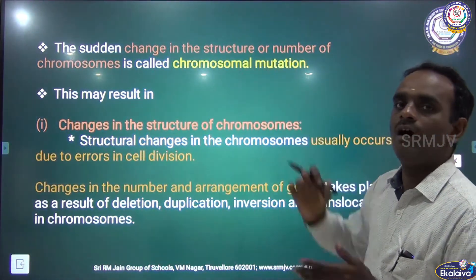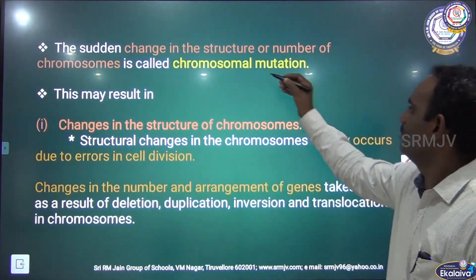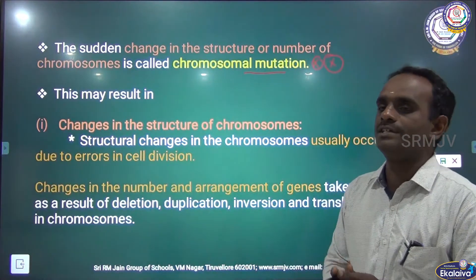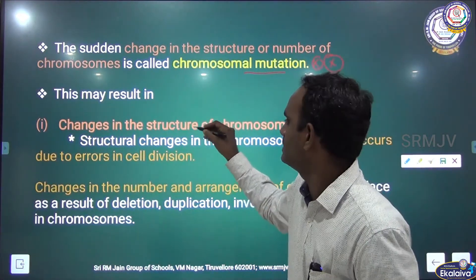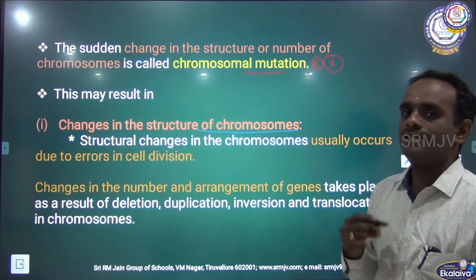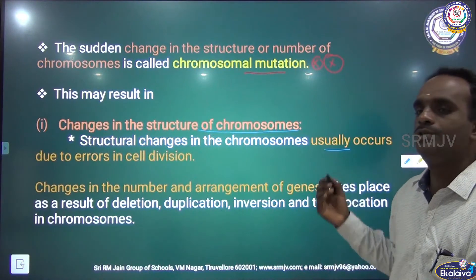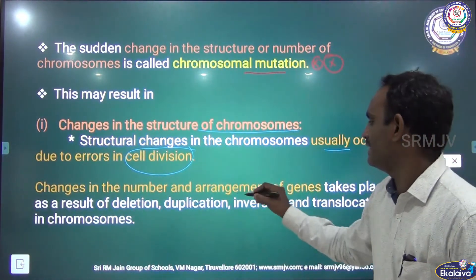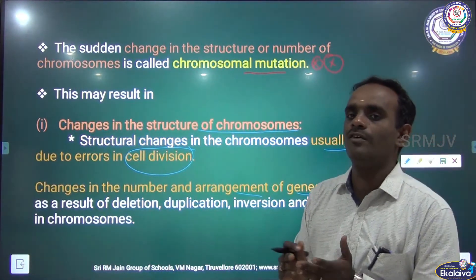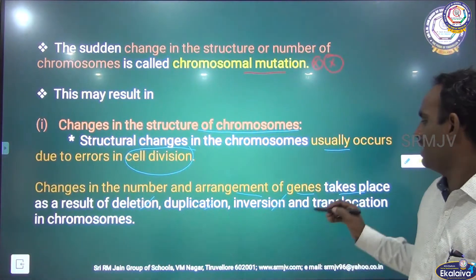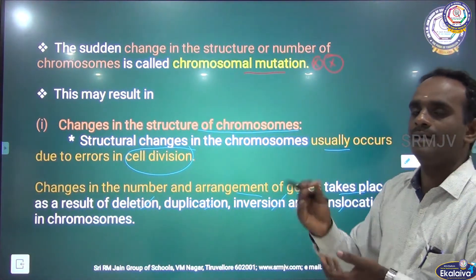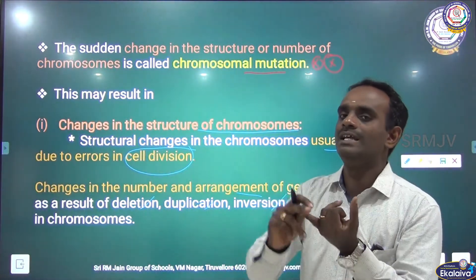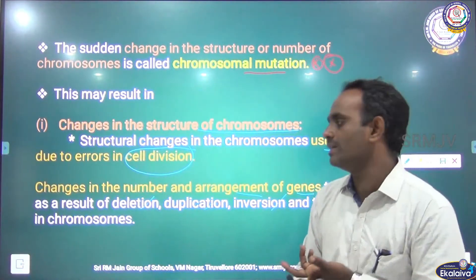The sudden change in the structure or the number of chromosomes is called chromosomal mutation. This chromosomal mutation may result in changes in the structure of the chromosomes. Structural changes in chromosomes usually occur due to errors in cell division. Changes in the number and arrangement of genes take place as a result of deletion, duplication, inversion, and translocation in chromosomes.